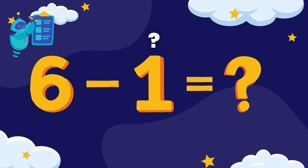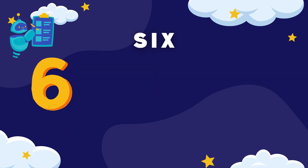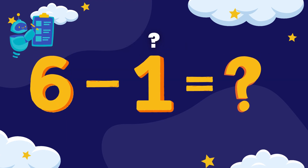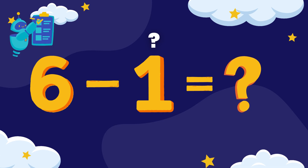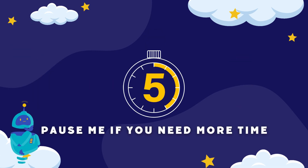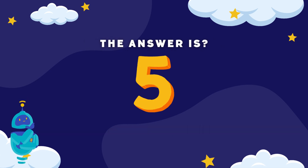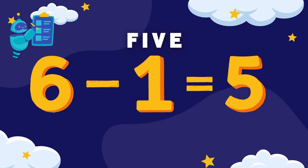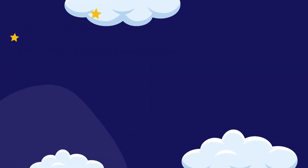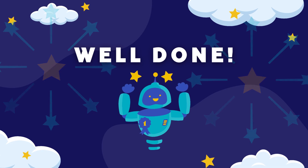What is six minus one? Six minus one equals... The answer is five. So six minus one is five. Well done again for following along.